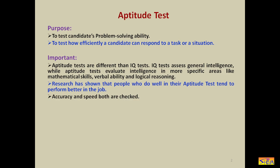Accuracy and speed are both checked during the aptitude test. You are given a fixed time — say, 30 minutes to solve 50 to 60 questions, or 60 minutes for 100 questions. So you have to focus on both speed and accuracy, solving the maximum number of questions correctly in the given time. Sometimes negative marking is also there, so before the start of the test, you must confirm whether negative marking applies or not.